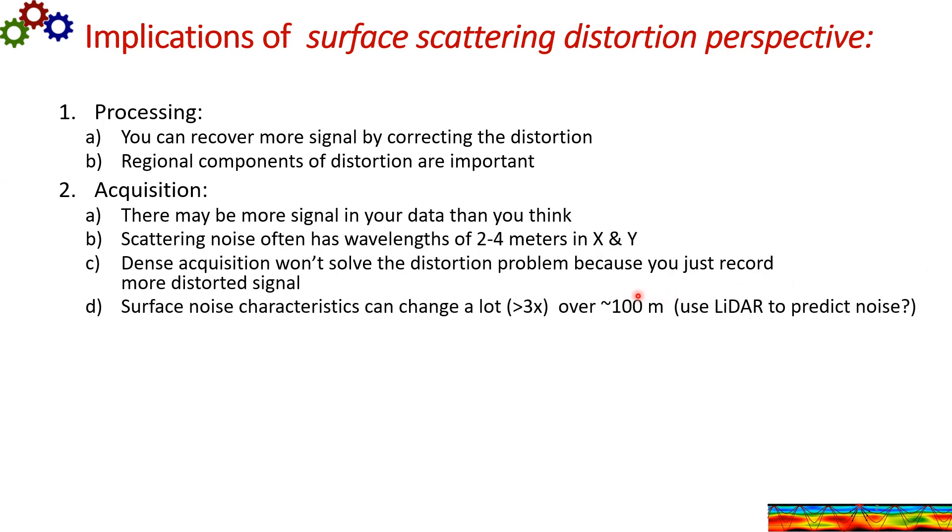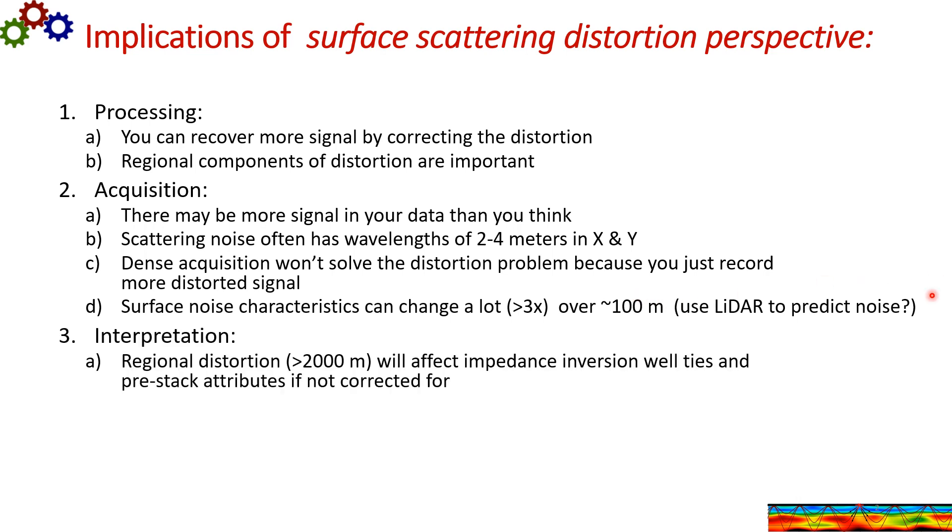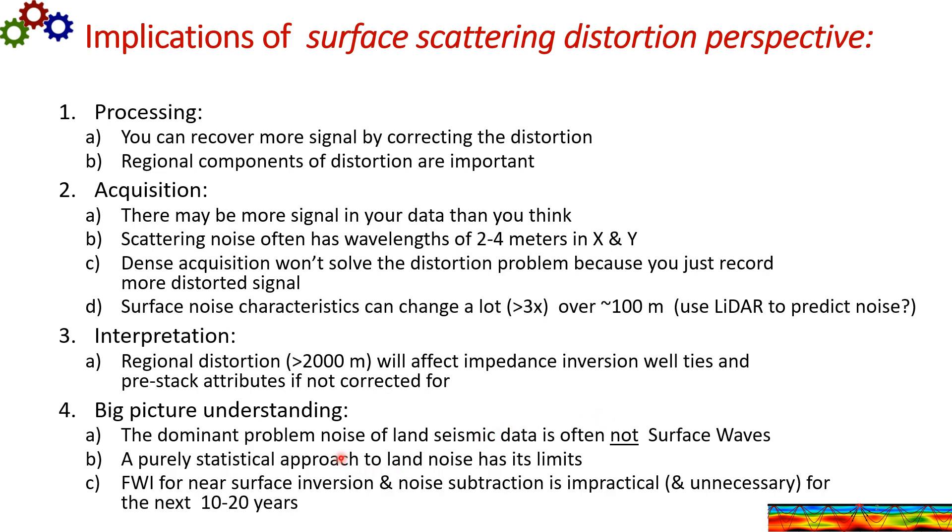In interpretation, large scale distortion will affect impedance inversion, well ties, and pre-stack attributes if the distortion is not corrected for. But also just big picture understanding of land seismic data. First is that the dominant problem noise of land seismic data is often not surface waves. The mainly statistical approach to land noise has its limits. And FWI and other near surface inversion methods, followed by noise subtraction, is impractical and unnecessary for the foreseeable future, say the next 10 or 20 years.